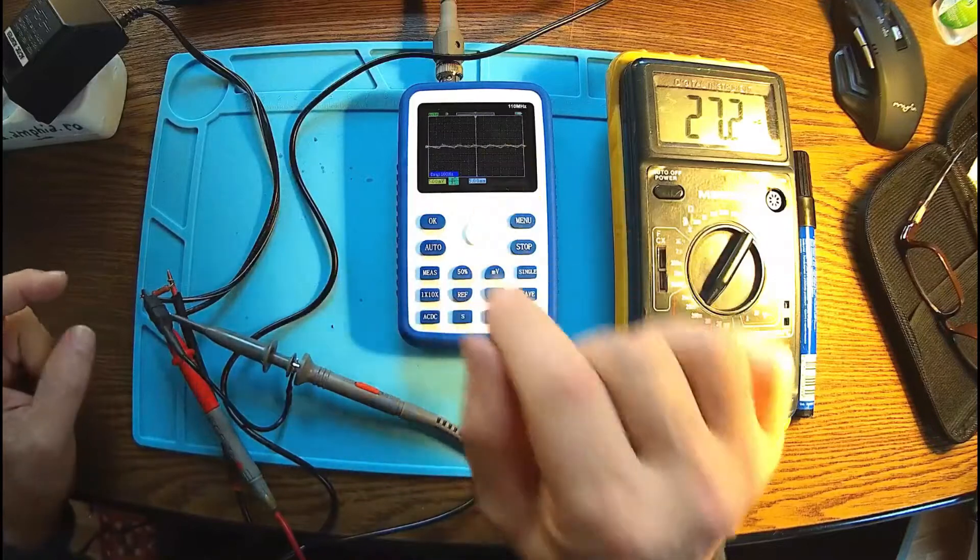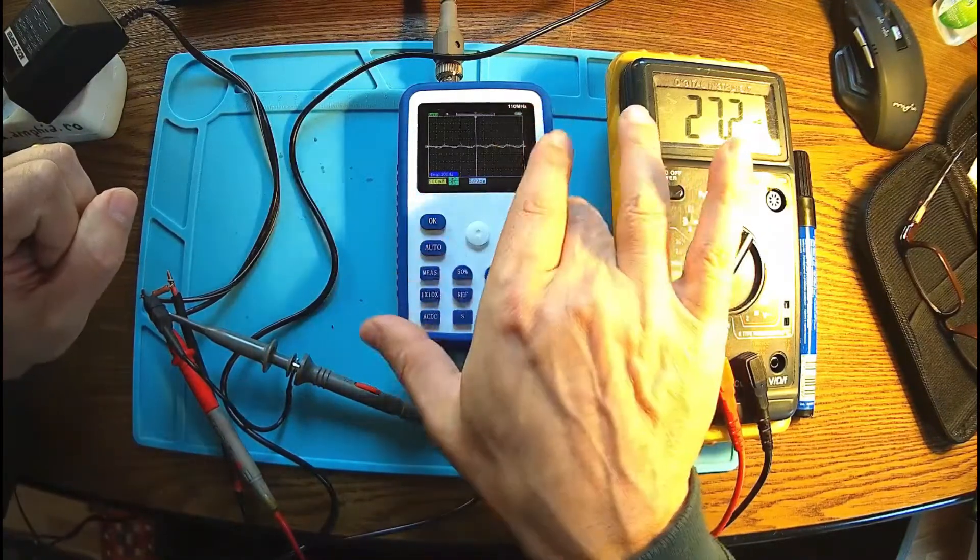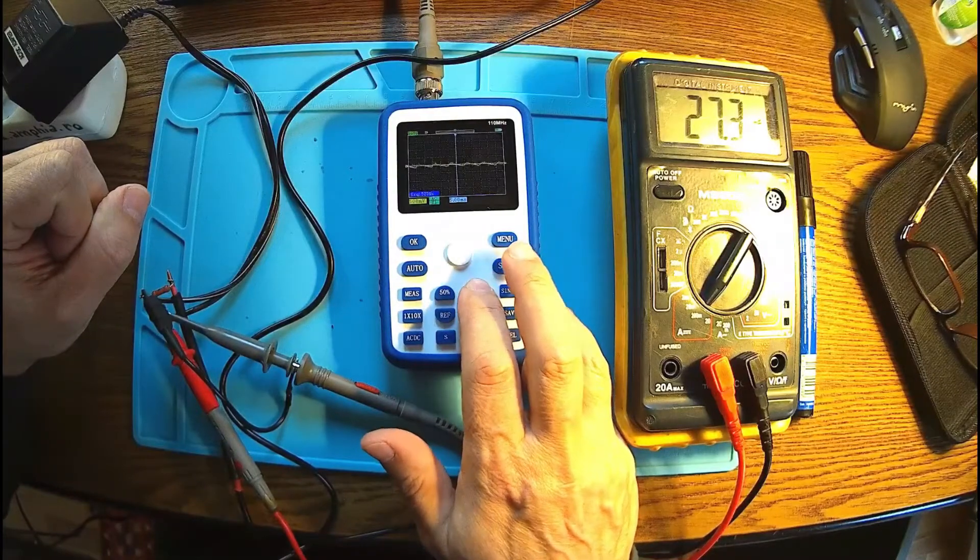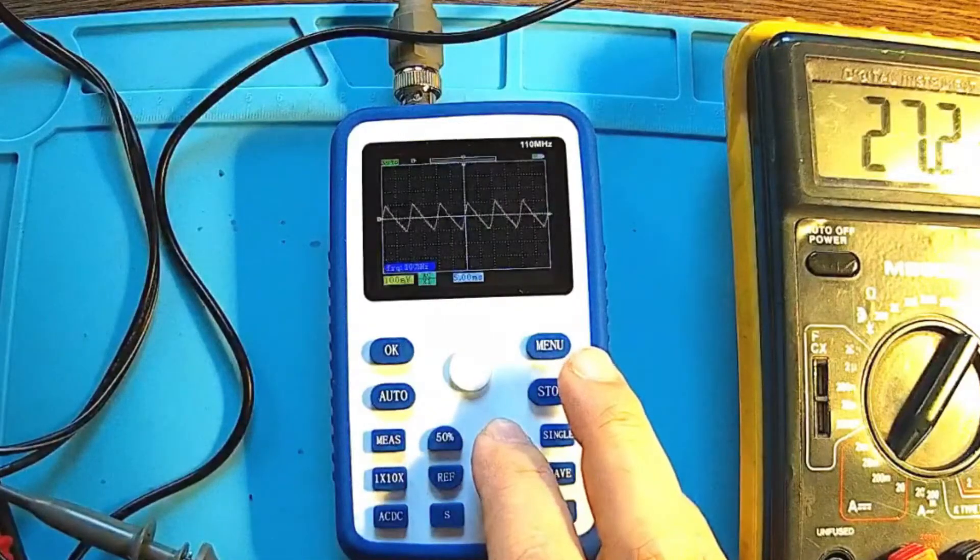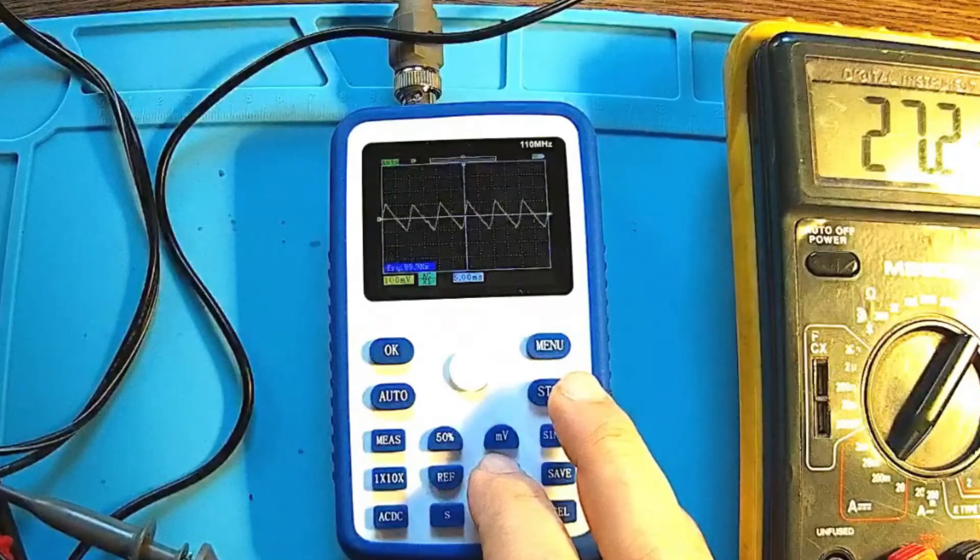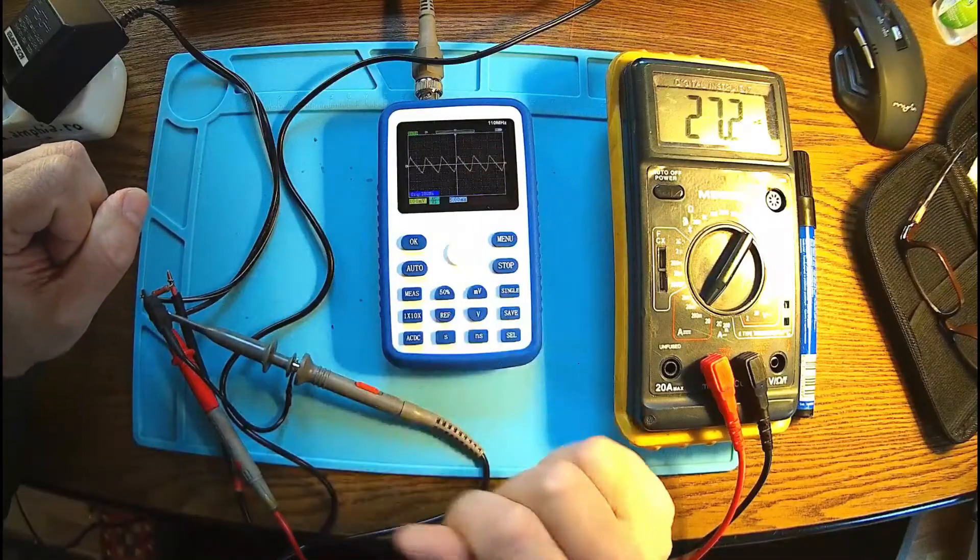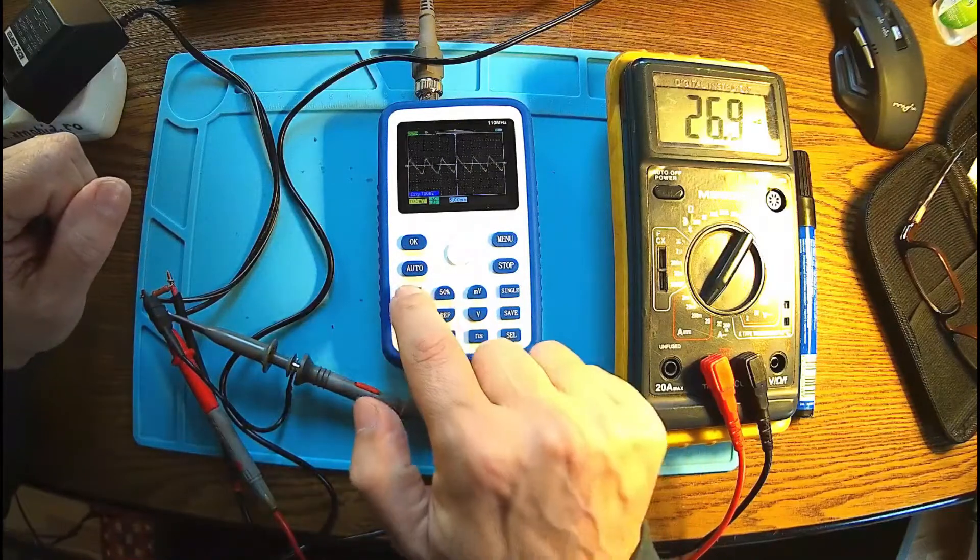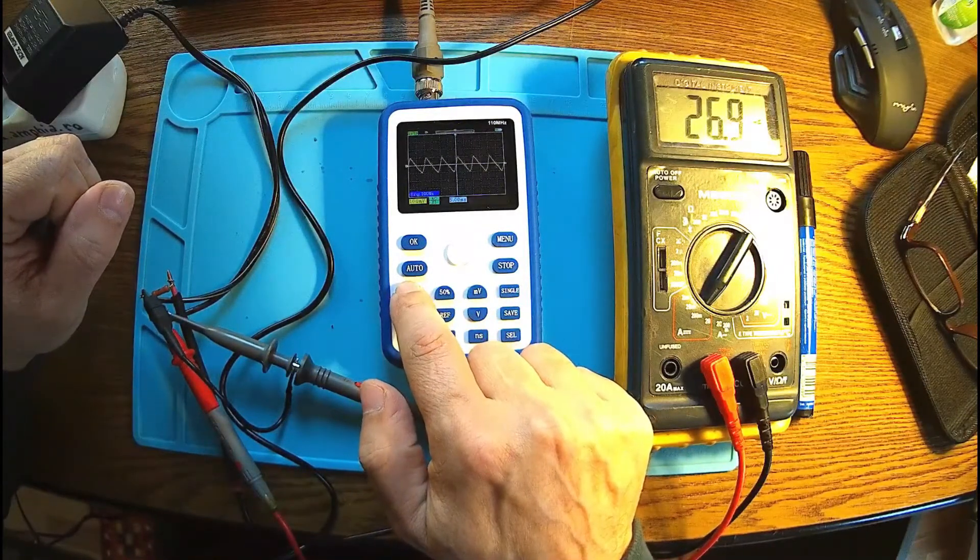And there we go, we already have this waveform. We can see it very clear. So that's the capacitance discharging to the resistor. Now can we measure the ripple?